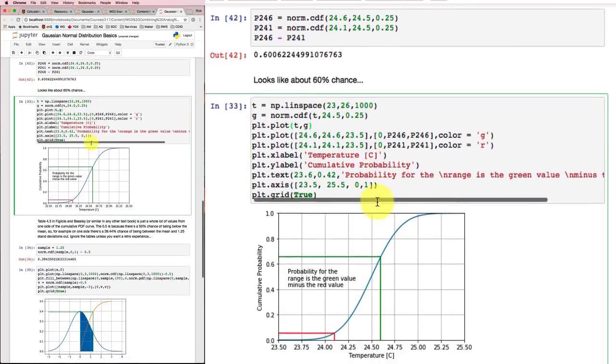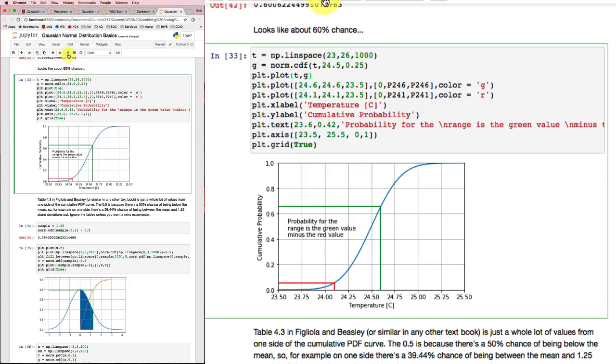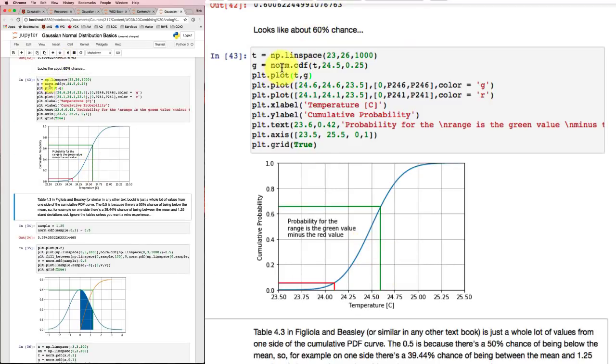Now once again down here, I can draw a picture for you that sorts all of that stuff out. And I can do the calculation and make the plot. So here I've got my function, norm CDF. I'm looking over a space between 23 and 26. I've got a mean of 24.5 and a standard deviation of 0.25. And I plot that out. There's that cumulative density function.